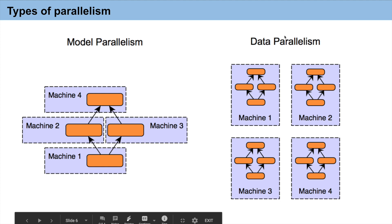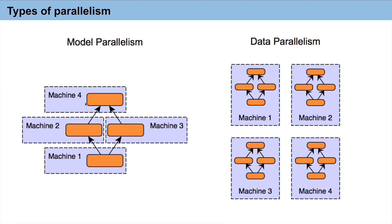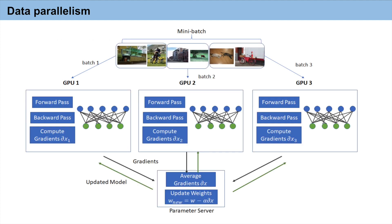Model parallelism is used when we have a very large model that is unable to load into a single GPU. In model parallelism, for example if a model has a thousand layers, you can run 100 layers on one GPU, 100 layers on another GPU, and so on. That is called model parallelism.